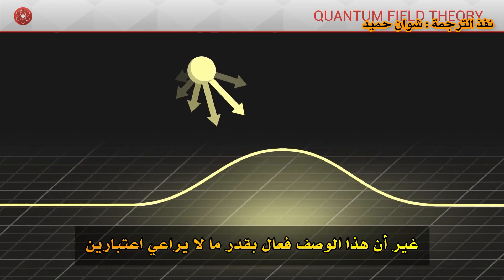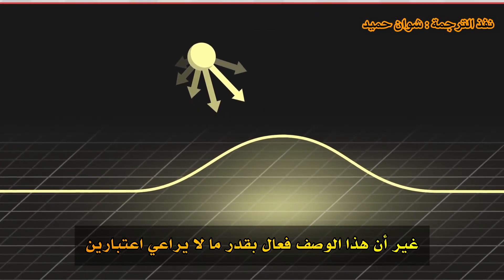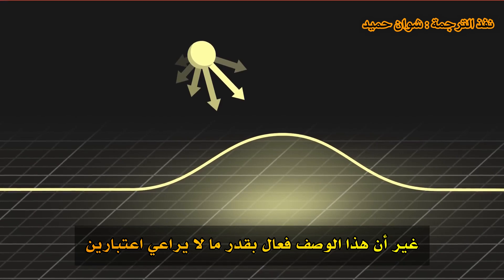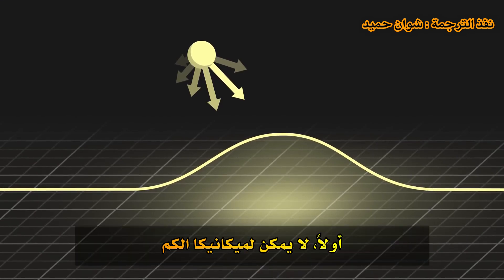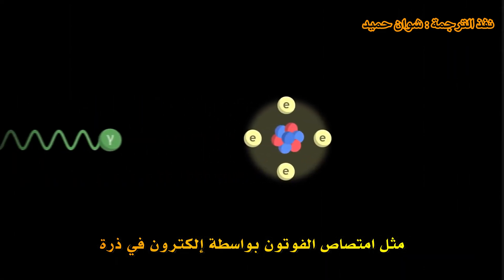However, this description, as effective as it is, fails to take into account two considerations. Firstly, quantum mechanics cannot describe situations where the number of particles varies over time. However, in nature we often observe that particles can appear or disappear, like when a photon gets absorbed by an electron in an atom.